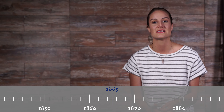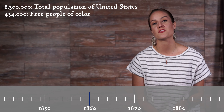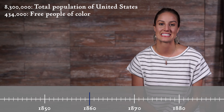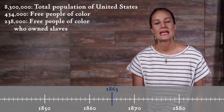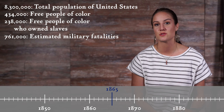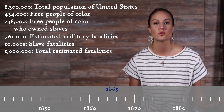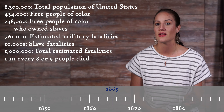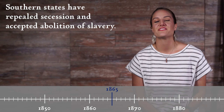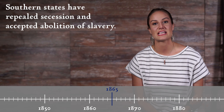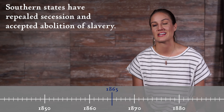The entire population of the United States, both slave and free, numbered 8.3 million. There were 434,000 free people of color in 1860, 238,000 of whom owned slaves, according to the U.S. Census. As a result of the Civil War, an estimated 761,000 soldiers died, while some tens of thousands of slaves died. Some put the total death toll at over a million, meaning that one in every eight or nine persons in the entire United States died as a result of the Civil War. By 1865, Southern states had repealed secession and accepted the 13th Amendment, the abolition of slavery. The rocky process of healing and reconciliation begins.